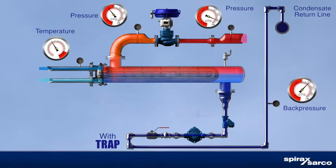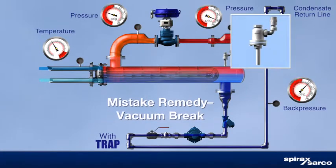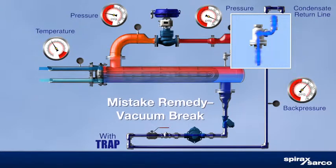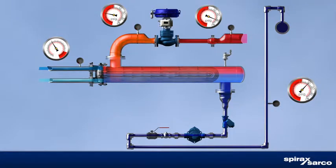Some operators address vacuum in the steam space by installing a vacuum breaker on the shell. This practice introduces atmospheric gases that dissolve readily into the cooler condensate. These dissolved gases form corrosives that attack wetted surfaces while doing nothing to eliminate the stall condition.